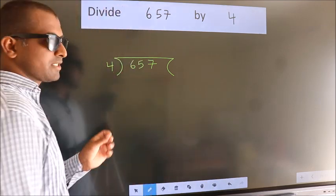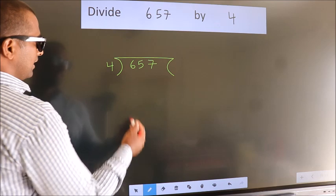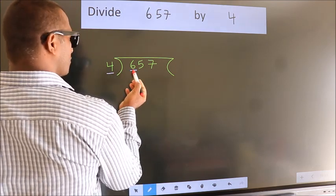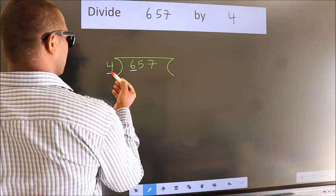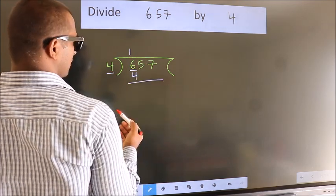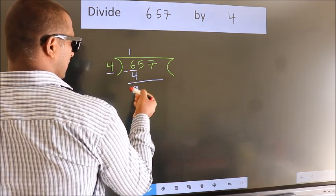This is your step 1. Next, here we have 6. A number close to 6 in the fourth table is 4 once 4. Now we should subtract. We get 2. After this...